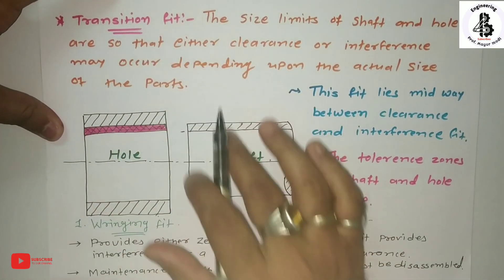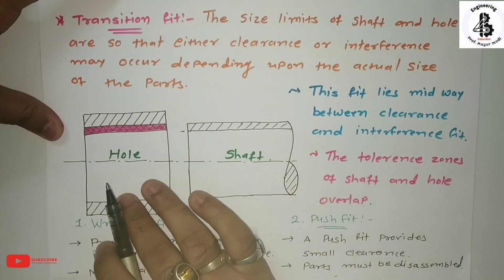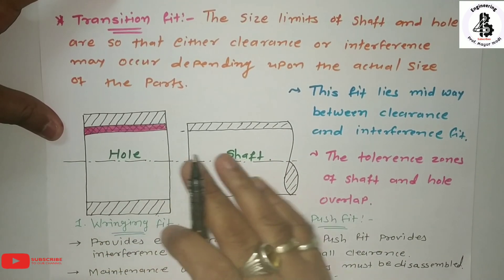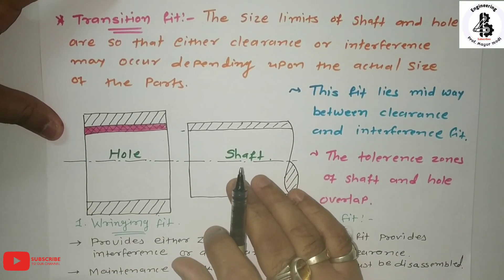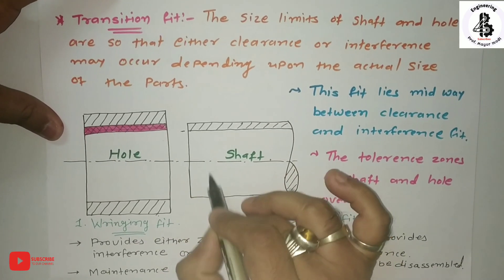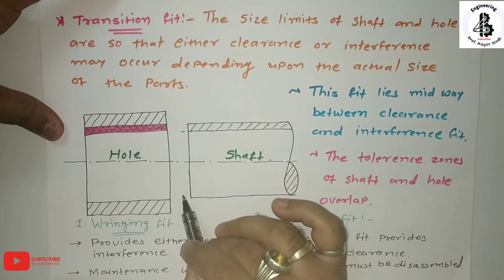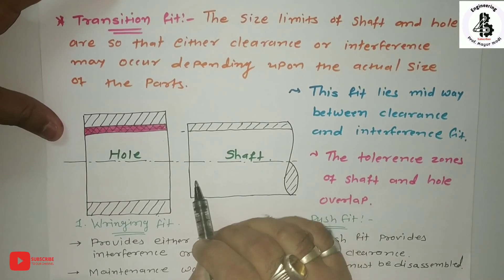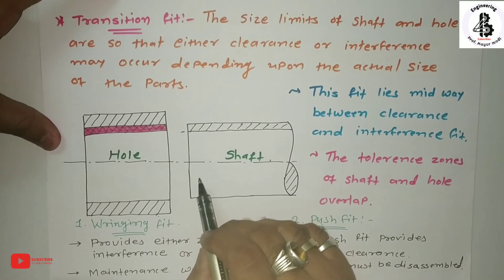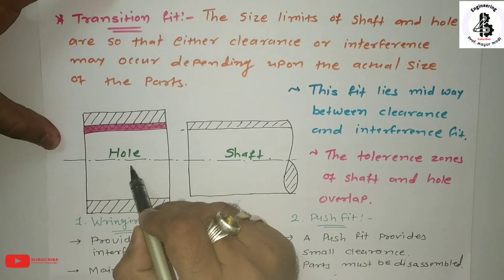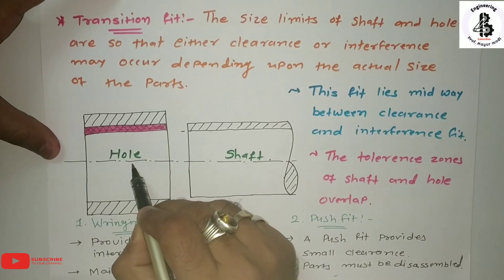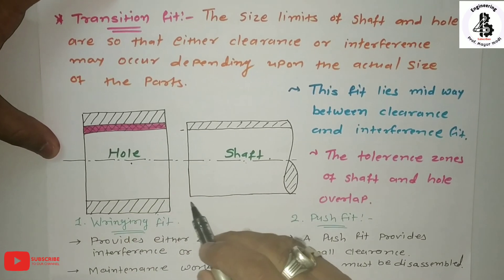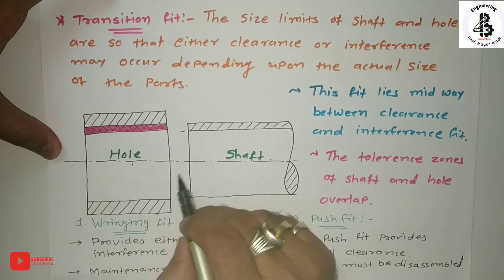You can consider it as a transition fit, either as a clearance fit or as an interference fit. This fit is midway between clearance and interference and depends upon the size limits of the shaft and hole systems. Basically, the tolerance zones of the shaft and hole will overlap.